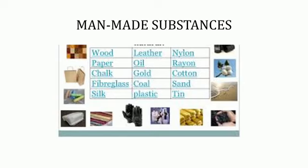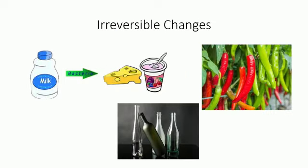Irreversible changes: an irreversible change is when something cannot be changed back to its original form. In many irreversible changes, new materials and substances are formed. For example, glass can be made from sand and calcium carbonate, but sand and calcium carbonate cannot be obtained again from glass. Similarly, green chilies or tomatoes turn red after some time.